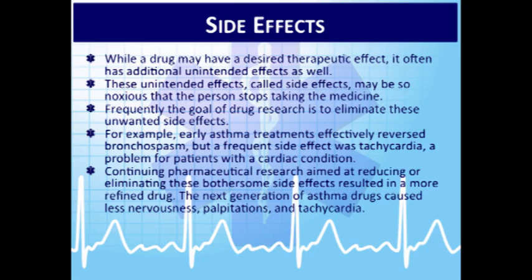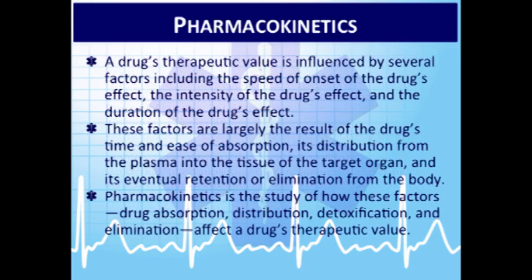A long time ago, albuterol was given systemically as syrup or tablets. Drug manufacturers developed albuterol as an inhaled solution — meter dose inhalers and nebulized solutions — so it specifically gets into the lungs, causing more bronchodilation without as much systemic absorption, reducing jitteriness, increased heart rate, and other side effects. These are all side effects of the medication.